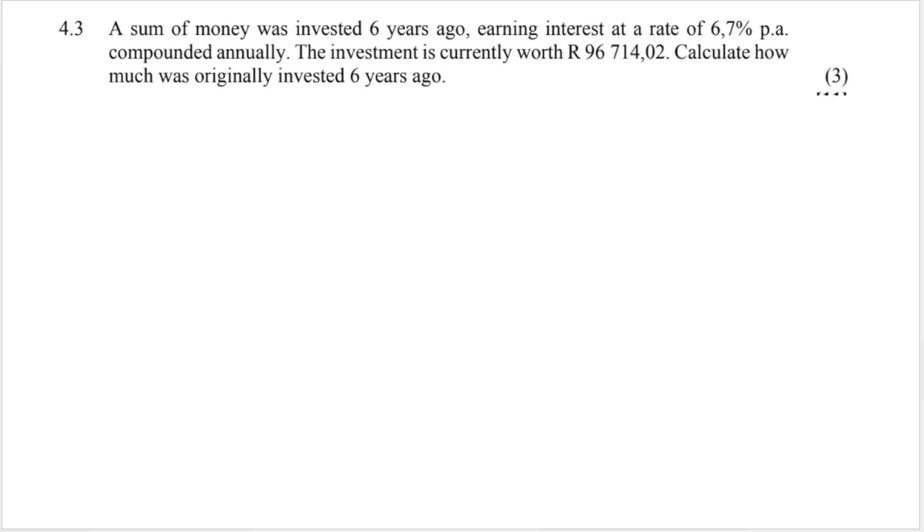My next question says a sum of money was invested six years ago. So N is six earning interest at a rate of 6.7 percent per annum compounded annually. Now very important as soon as you see compounded compounded you know you're not going to use simple interest anymore. We're going to be using our compound interest formula different formula. Just take note that some textbooks use R instead of I but it is the interest rate and remember again we'll need to divide that by 100 because it's a percentage. The investment is currently worth 96,714.02 rand. When they say currently worth clearly that's not the amount that we started with. It's not P. It's A. It is after a certain amount of years. It's after six years. This is the value over here. So that is my A value.